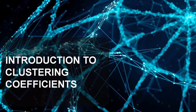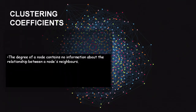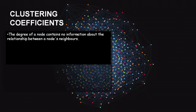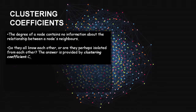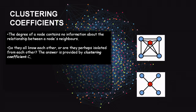Introduction to clustering coefficient: the degree of a node contains no information about the relationship between a node's neighbors. Do the neighbors of a particular node know each other, or are they isolated from each other? Consider two graphs — graph one and graph two — where node i has the same degree in both, but the neighbors of i are more clustered and more connected in graph one than in graph two.